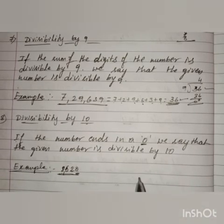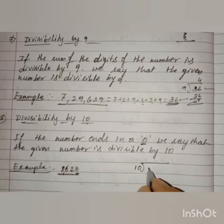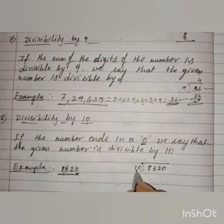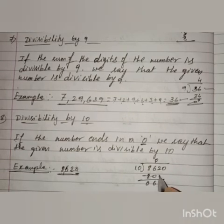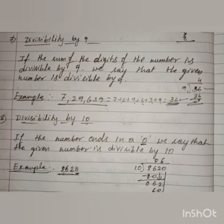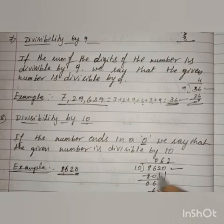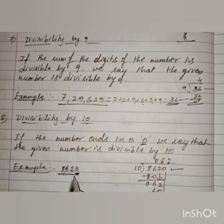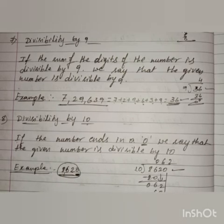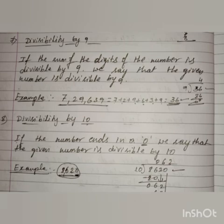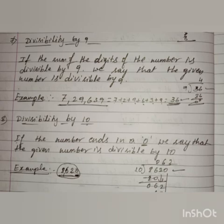Now let us check whether 8620 is divisible by 10 or not by performing the division. The division confirms it is divisible by 10. So if the given number ends with 0, then the entire number is also divisible by 10. Got it, children? These are the divisibility tests. In the next session, we will discuss assignments 1, 2, and 3. Thank you.